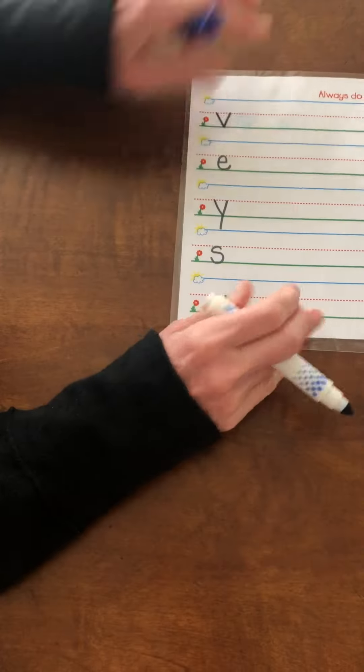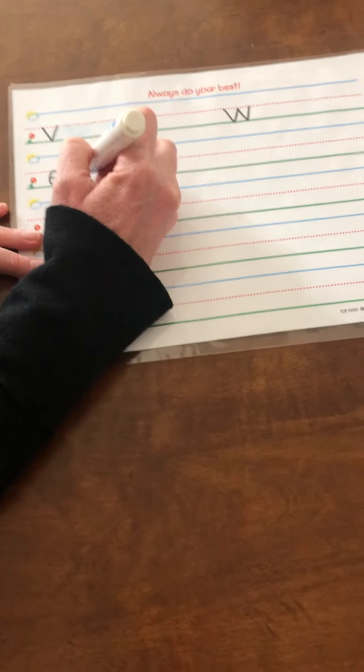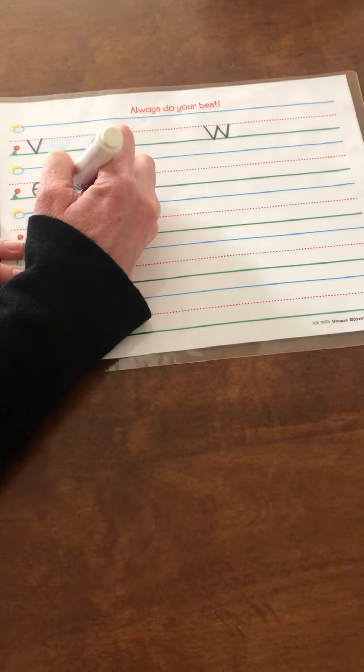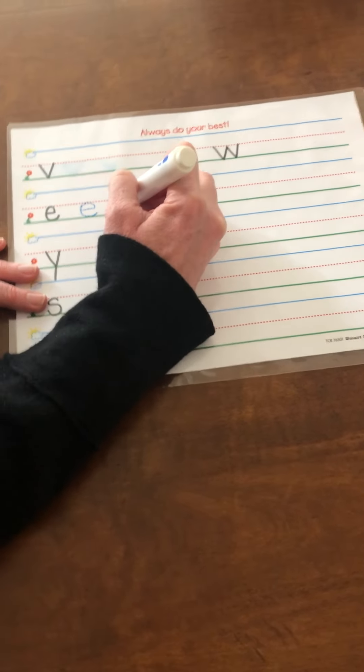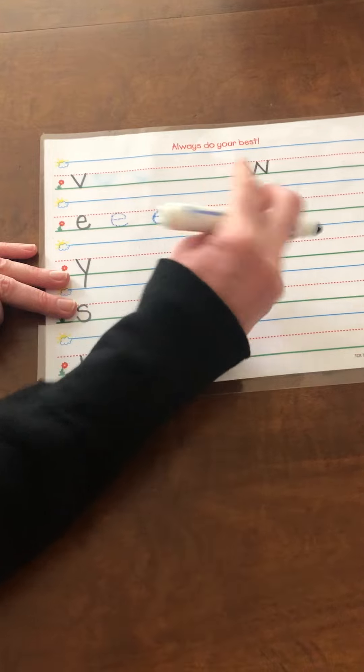Then I want you to practice your lowercase E's. These are a little trickier. So you're gonna go below the red line and put your marker down in a spot. Then you're gonna go out, up, and around the town. Try it again: out, up, and around the town. Keep doing the whole entire line you practice.